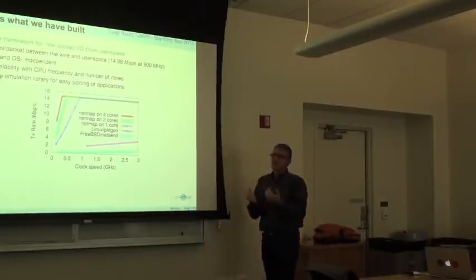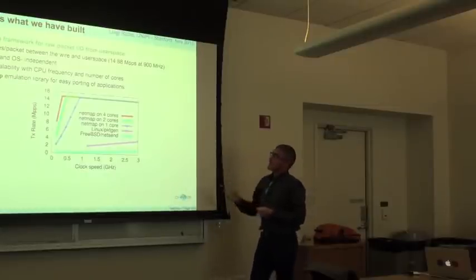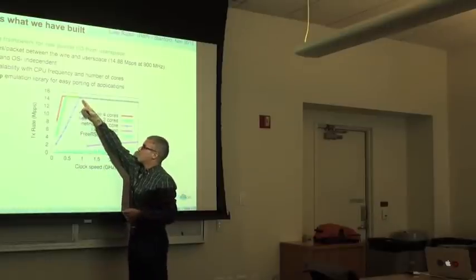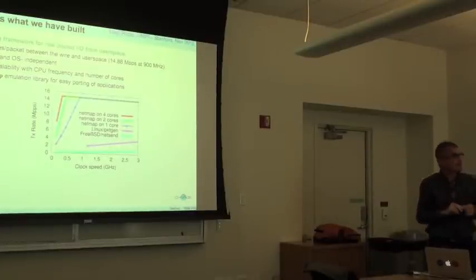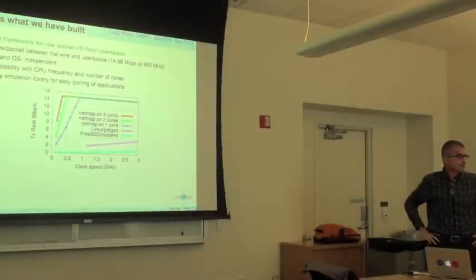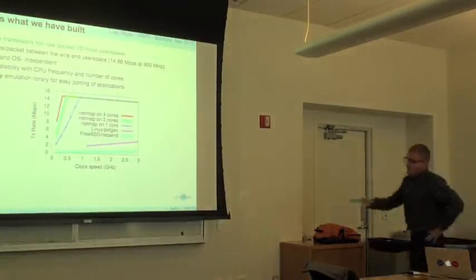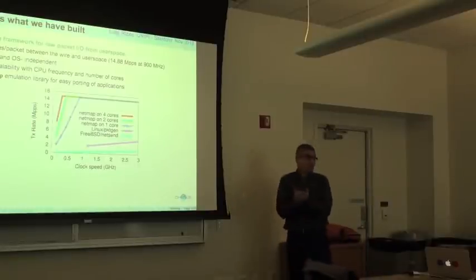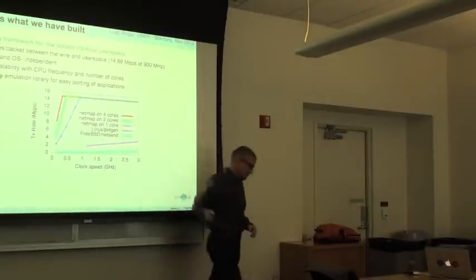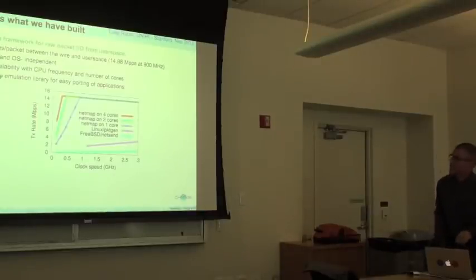These measurements are all with minimum-size packets. I'm plotting with variable clock speeds because our system is so fast it saturates the link at top speed — we need to underclock the CPU to find the exact performance point. With 14 million minimum-size 64-byte packets per second, that's 14.88 million, which is the magic number for 10 Gbps with 64-byte frames including framing. NetMap achieves this.